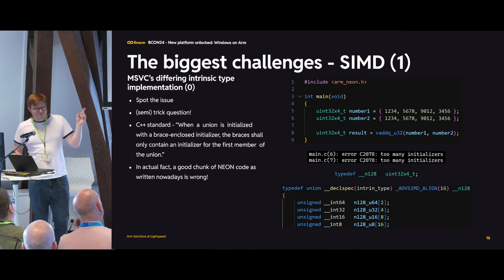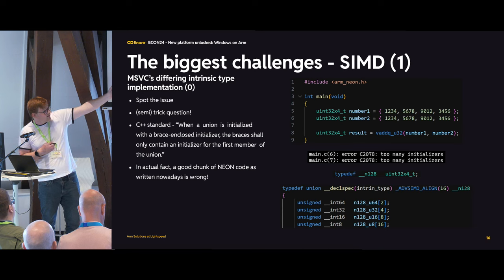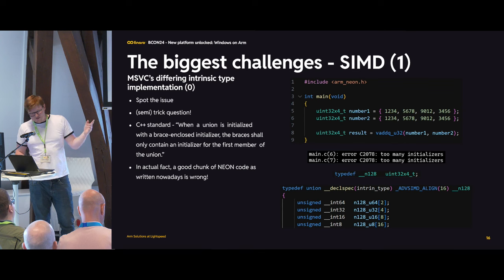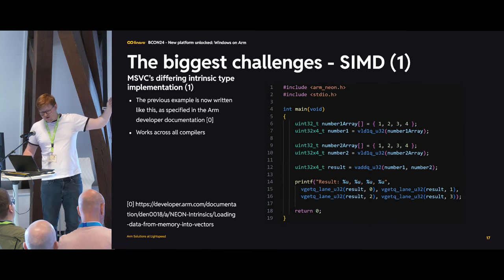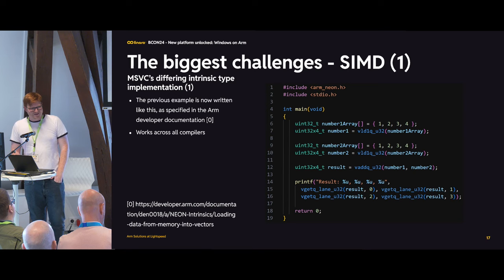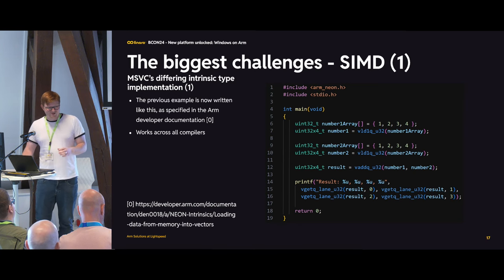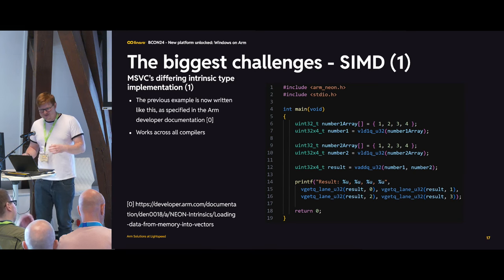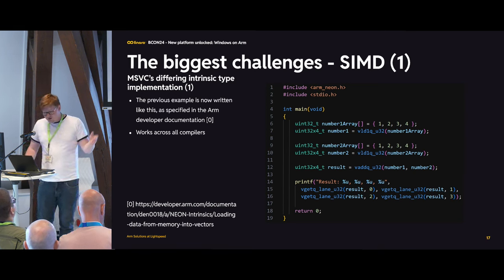It's a trick question — it compiles in Clang just fine. But MSVC implements the backing type differently using a union, which strictly adheres to the C++ standard saying you can't initialize a union with any other type. So inline initializers don't work. You have to have a backing array, load it in, and only then operate on it. Most Neon code as actually written is wrong, and MSVC is technically right — but that means rewriting a bunch of code. The correct form works across all compilers.